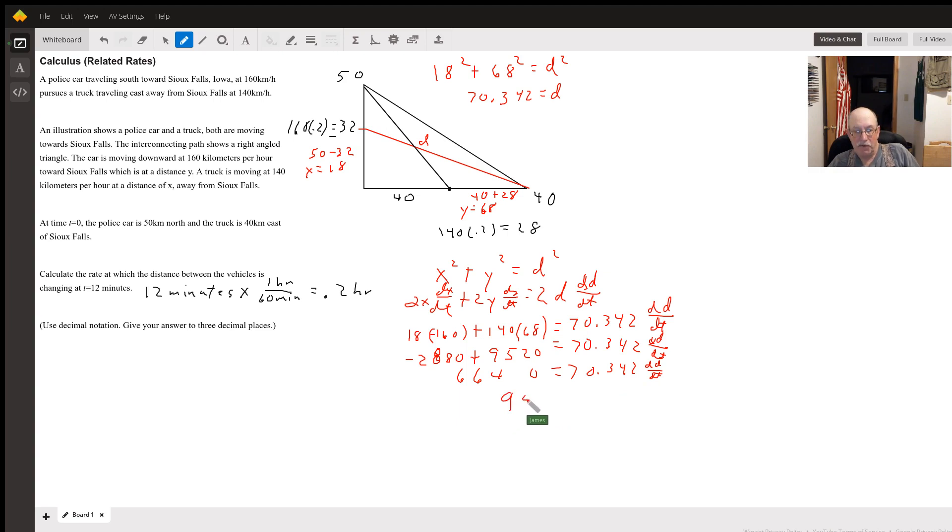And we get 94 kilometers per hour equals dd/dt. So at that time, the distance is increasing at 94 kilometers per hour at 12 seconds. So there you go.